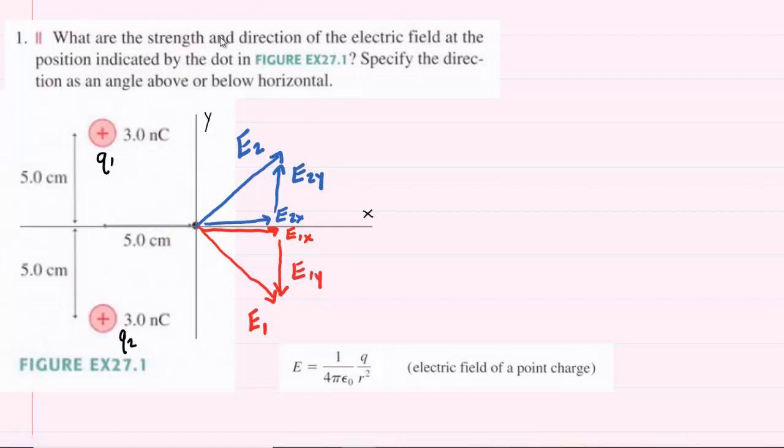Now, there's something very important to notice regarding E2y and E1y. We can see that one points up and the other points down. Furthermore, notice that because the charges are equivalent and the distance from each charge to this point is the same, that would mean that the upward y-component and the downward y-component of the two electric fields are equal in magnitude, so they're actually going to cancel out.